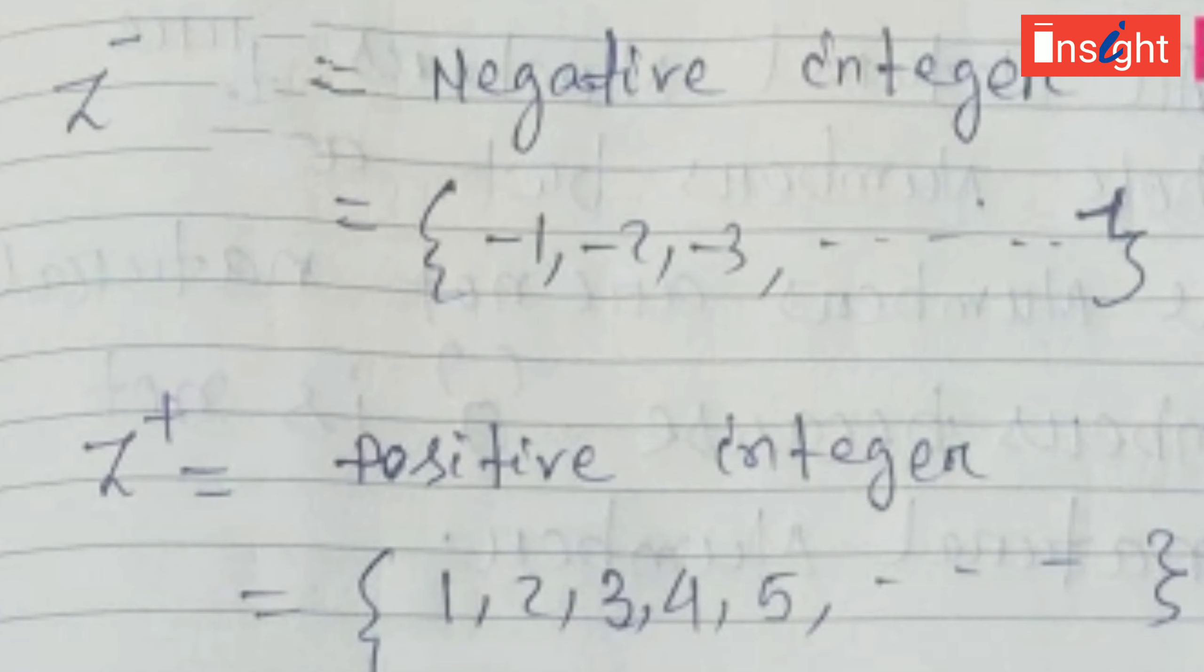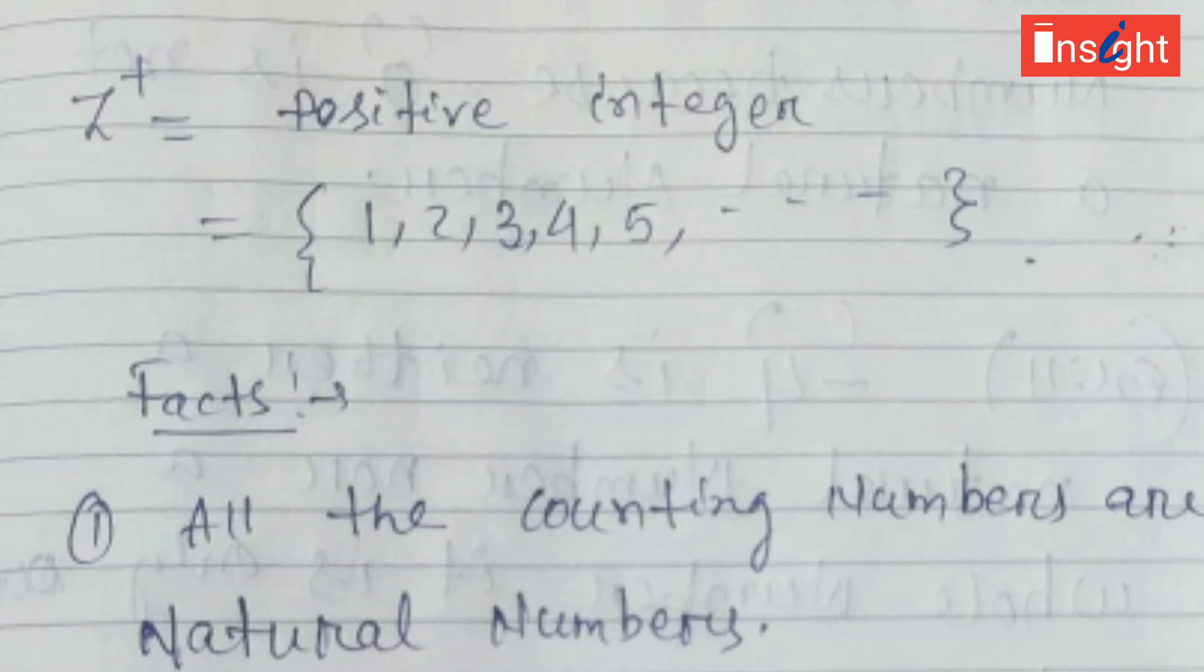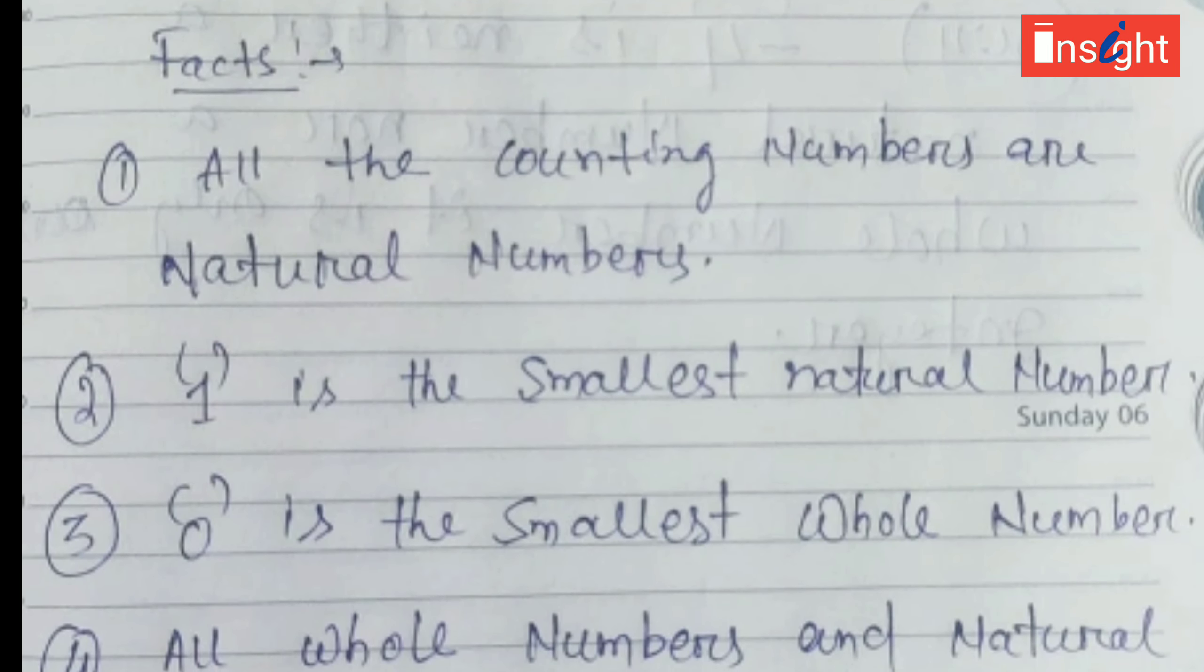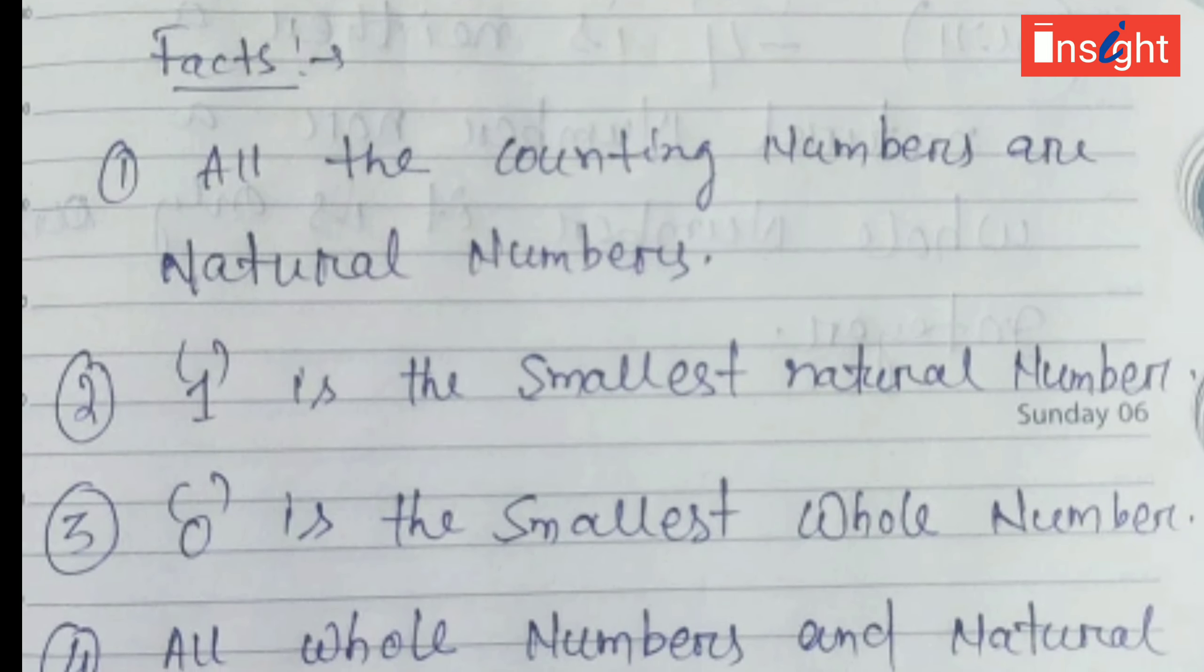The negative numbers are called negative integers. The positive numbers are called positive integers. Z minus shows all the negative integers which starts from -1, -2, -3, up to unlimited numbers. Z plus represents the positive integers, starting from 1, 2, 3, and so on.